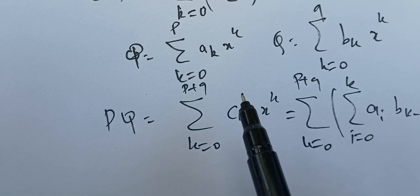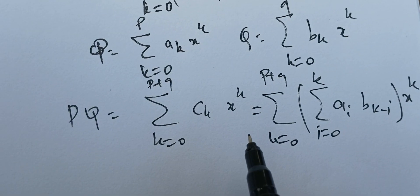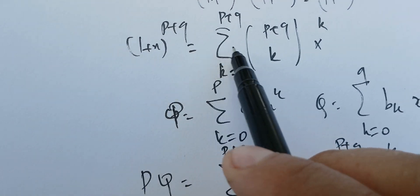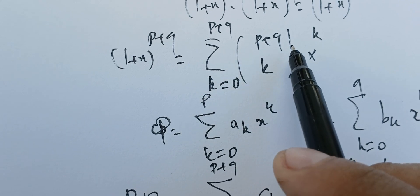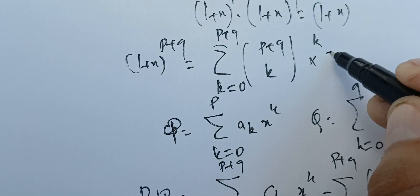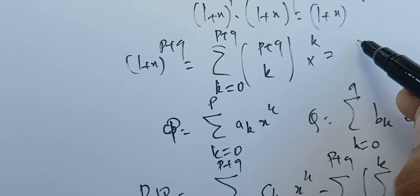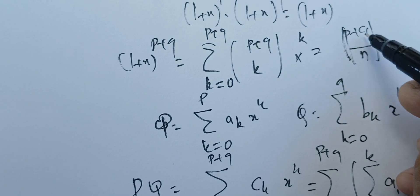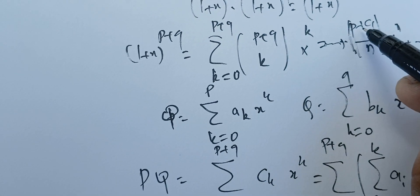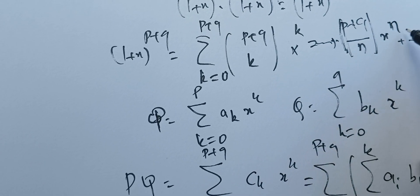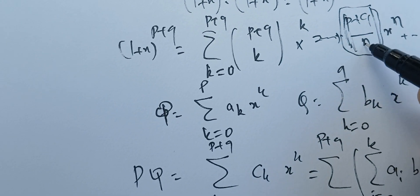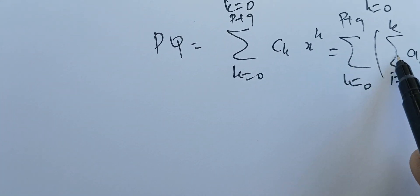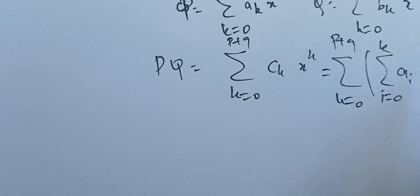Now we want to do polynomial identification. On the right-hand side, (1+x)^(p+q) expanded by the binomial theorem, the coefficient of x^n is (p+q choose n), so that term is (p+q choose n) · x^n plus all the other terms.